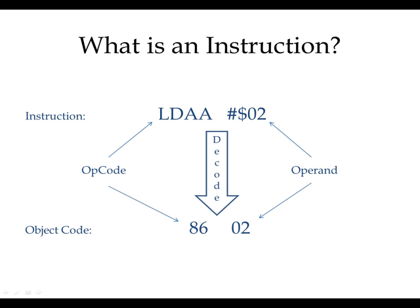For example, consider the instruction LDAA pound sign dollar zero two. We don't fully understand this instruction yet, but we know the addressing mode is immediate. Based on that, we'll be able to find out the object code. Object code is the machine code — that's the code the microprocessor understands directly. So tonight, we will learn how to write the object code from a given line of instruction.